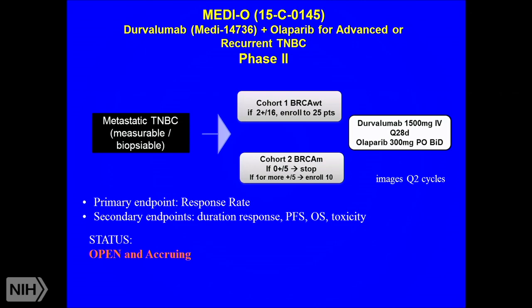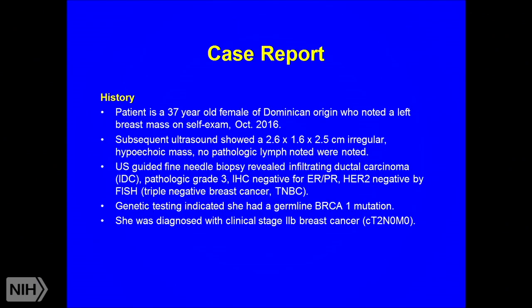The trial has two cohorts in metastatic triple-negative breast cancer patients with measurable disease: one for BRCA wild-type and one for BRCA-mutated patients. Patients receive durvalumab 1,500 mg IV on a 28-day schedule, and olaparib 300 mg orally twice daily. Primary endpoint is response rate; secondary endpoints include duration of response, progression-free survival, overall survival, and toxicity. The trial is currently open and accruing.